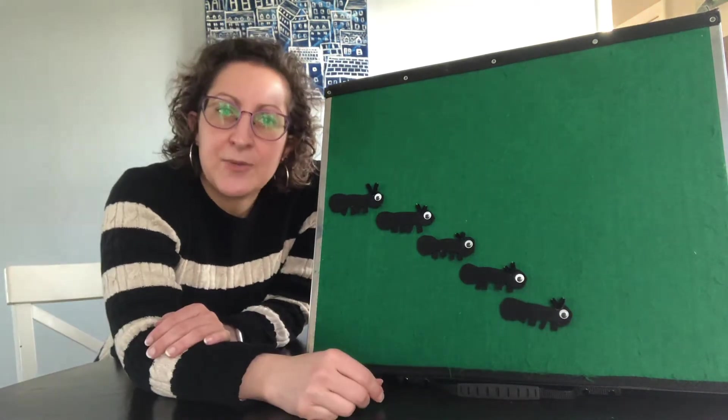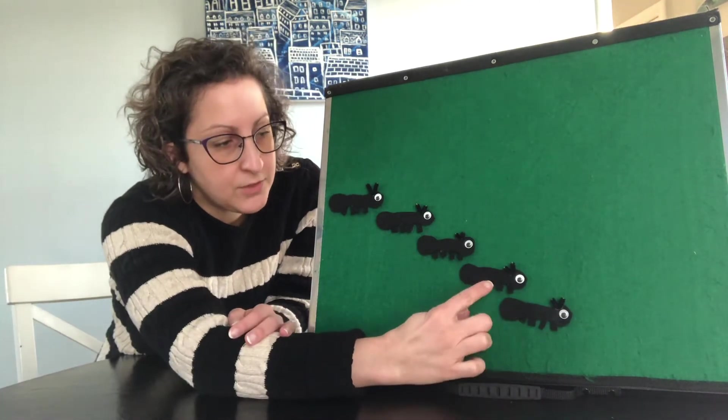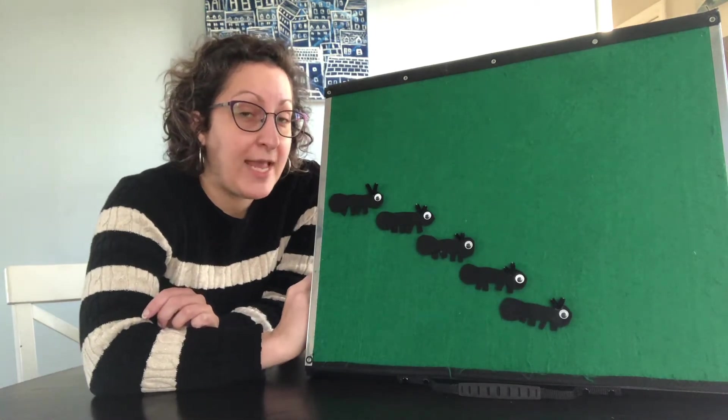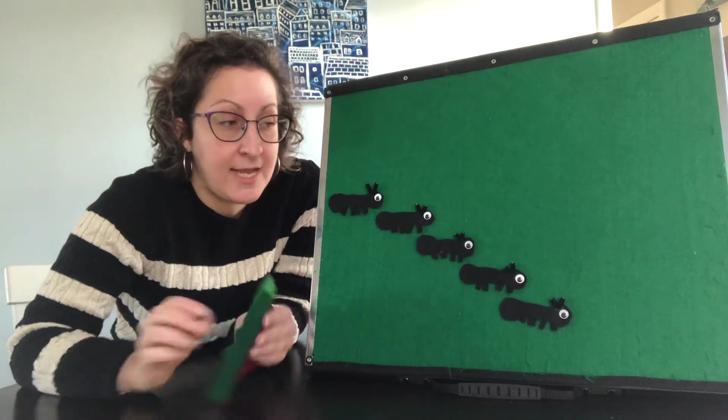All right. How many ants do we have? Let's take a look. One, two, three, four, five. So we have five hungry ants marching in a line.